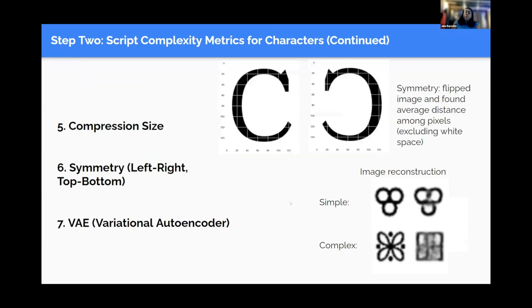Number five, the compression size. In this one, we just compressed these images into zip files and figured out how big is that file. Number six, symmetry. This is one that I worked a lot on. We just take an image, flip it, and then count the difference between these two images to come up with a complexity metric. And finally, number seven, VAE, or variational autoencoders. We used this by giving it an image, it would turn this image into a 64-length array, so a much simpler base, and it would try to recreate the image again.